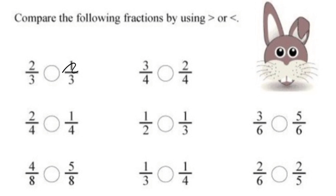So we will put the greater sign in the circle because 2 by 3 is greater than 1 by 3. In the next question, 3 by 4 and 2 by 4 — the denominators are same. So again, 3 by 4 is greater here and 2 by 4 is lesser. So we will put the greater sign here because the denominators are same.